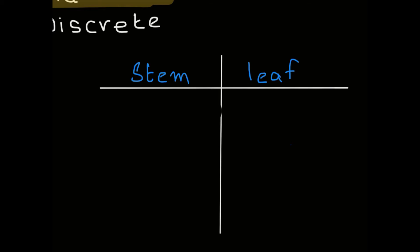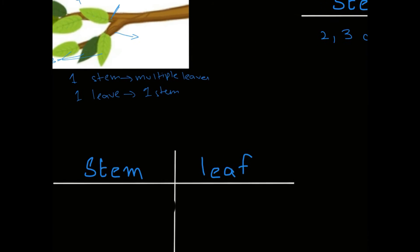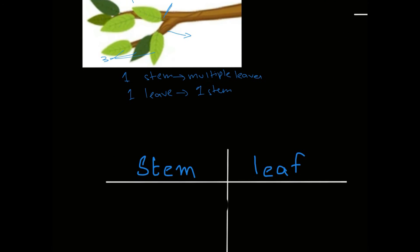Another important rule: you can have a two or three digit number in the stem section, but you cannot have a two or three digit number in the leaf section. You must only have a one digit number in the leaf section. For example, consider the following set of values: 73, 46, 20, 22.